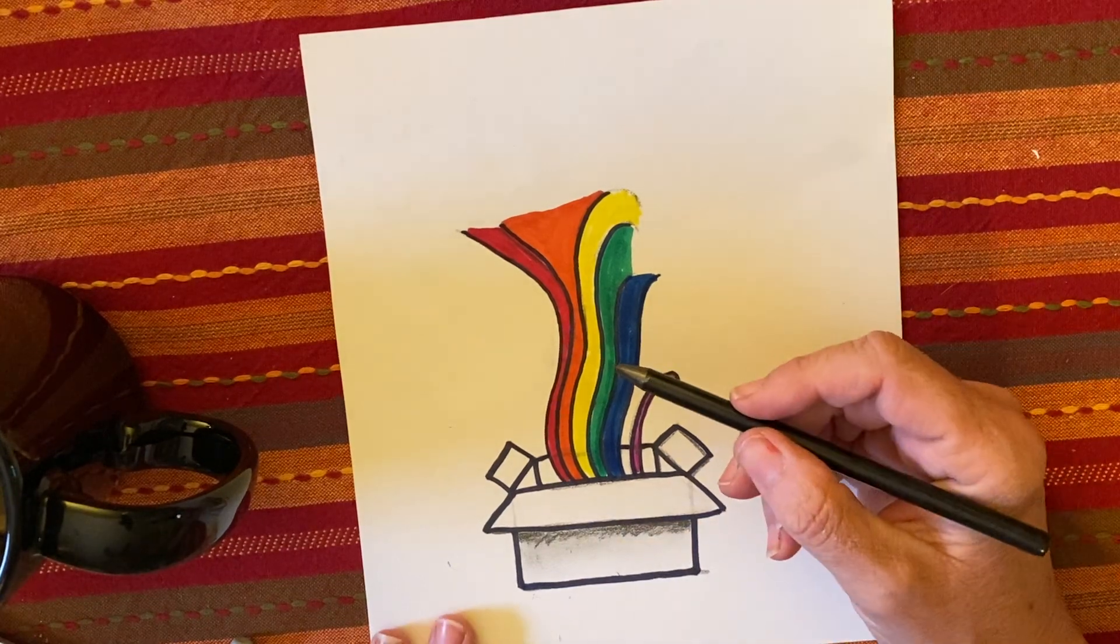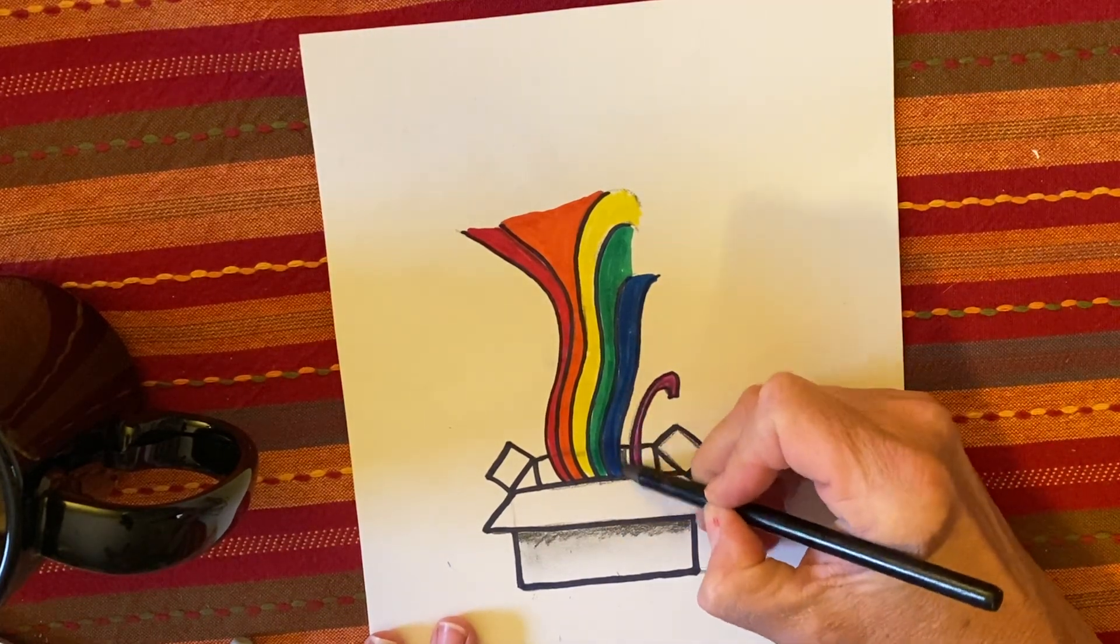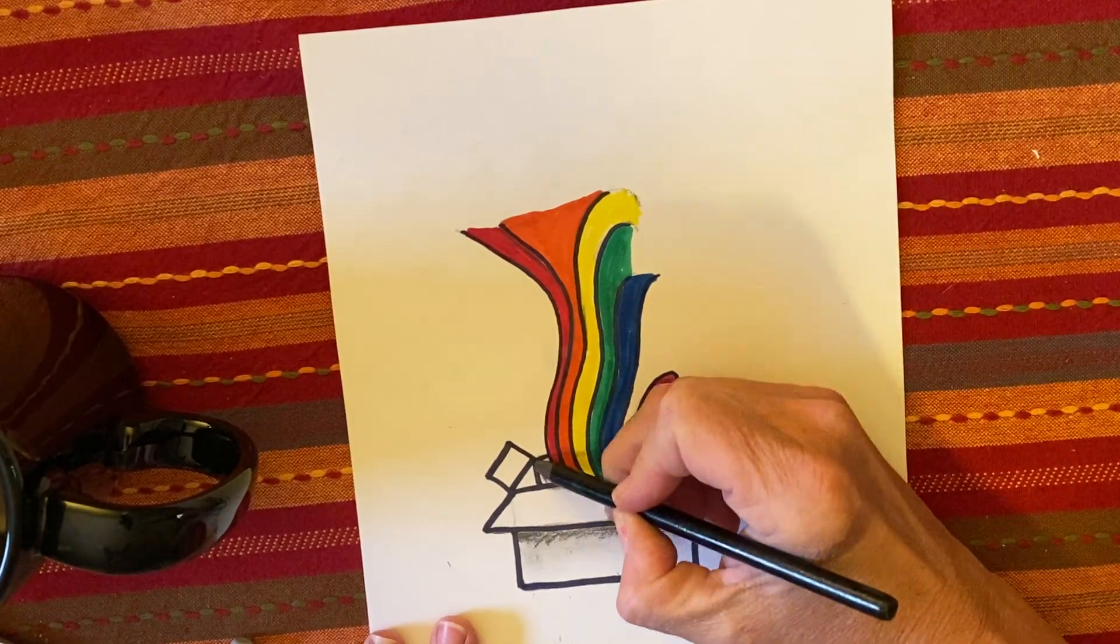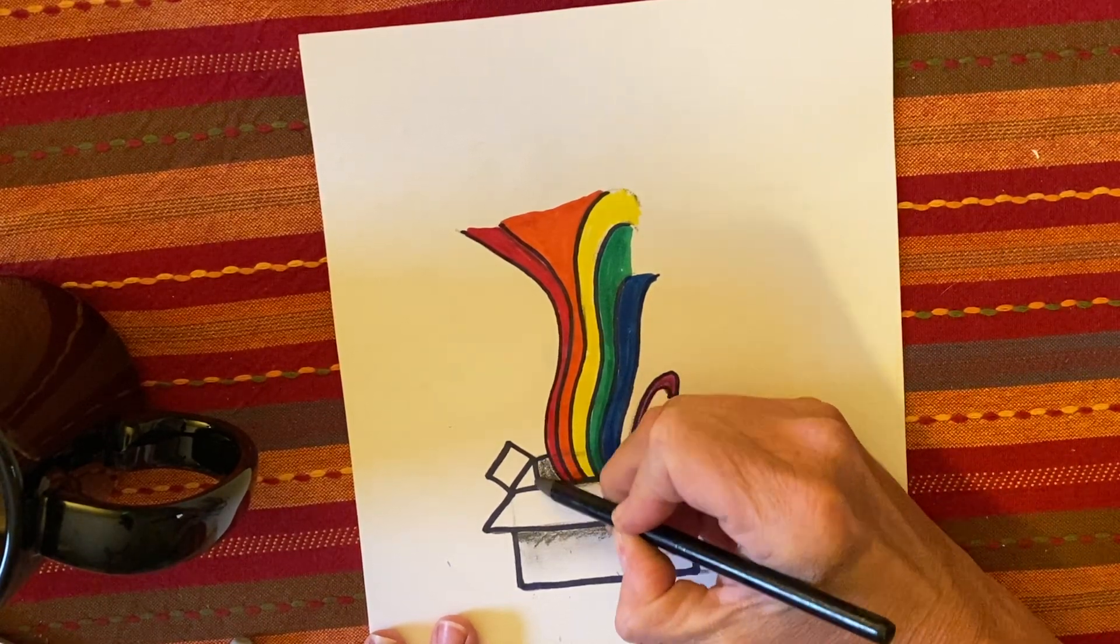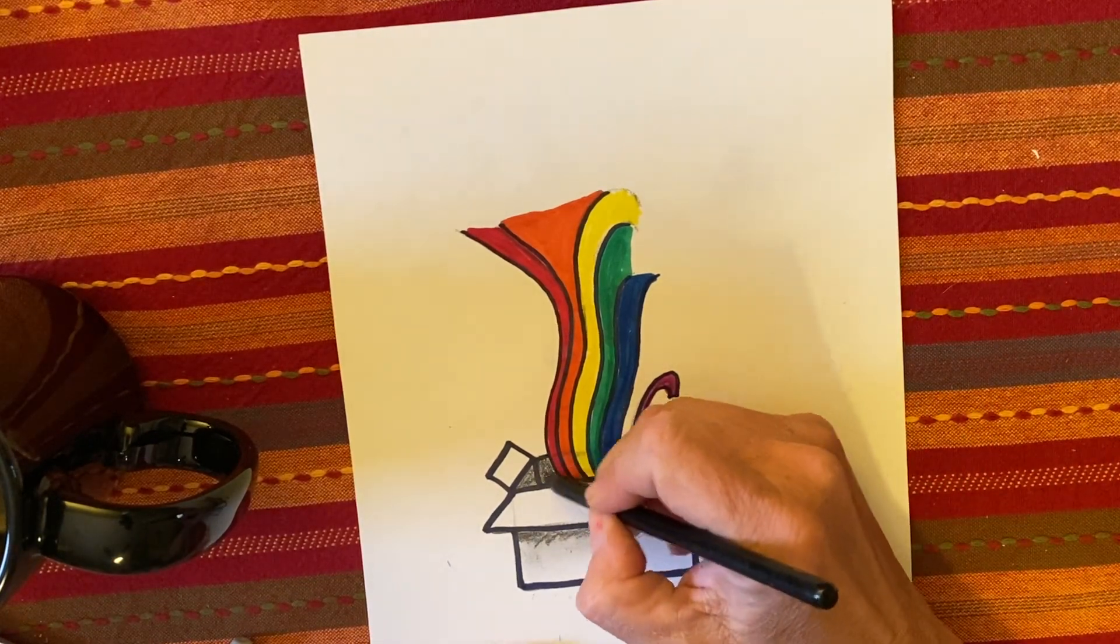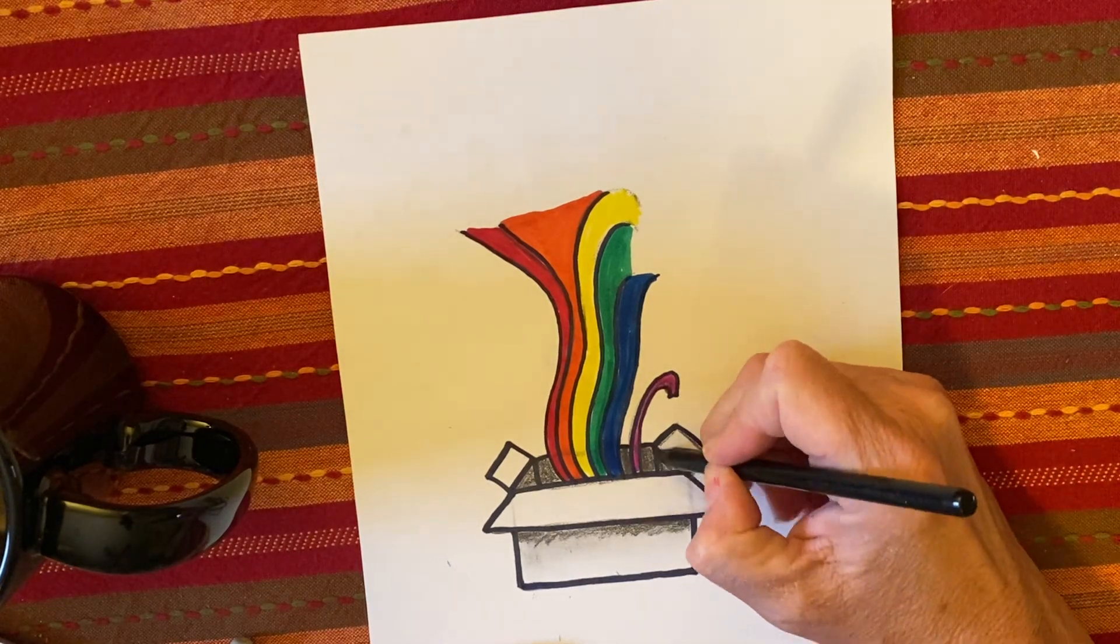And then on the inside of the box, this is really dark. So we want the inside of our box. And there you have it.